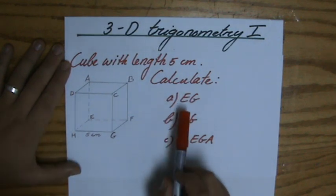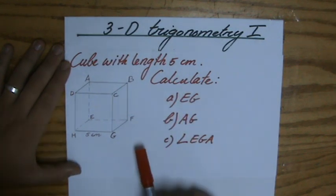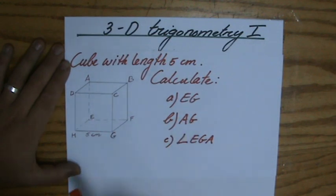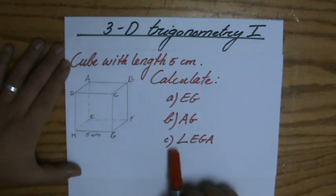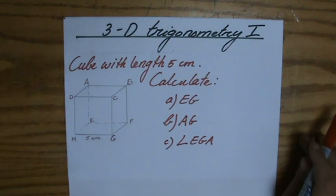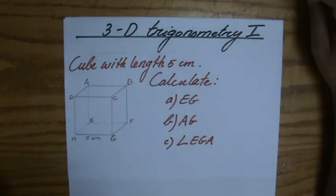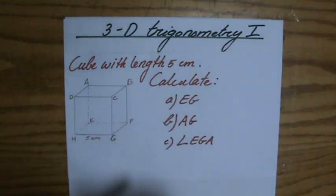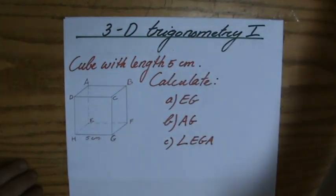And we have to calculate EG, so the length of E to point G. We have to calculate AG, and we have to find angle EGA. Alright. Now, let's have a go with the first question. So EG, I'm going to do that on a separate piece of paper.